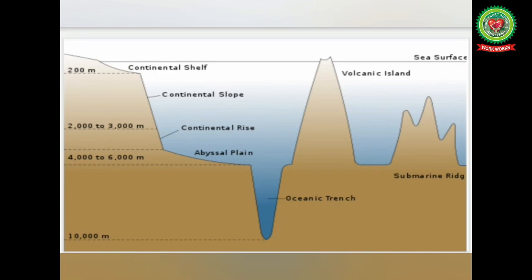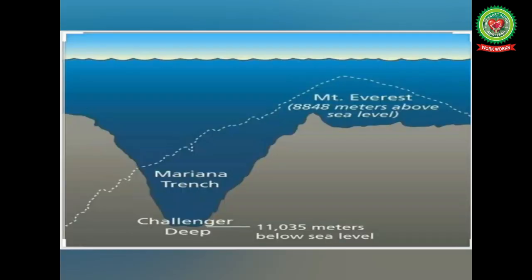The next feature is submarine trenches. A trench is a long, narrow, and steep-sided depression on the ocean floor. Trenches are the deepest part of the ocean bottom with their usual depth of about 5,500 meters. They have been formed due to down-faulting or down-folding of the earth's crust, making them tectonic in origin — formed due to volcanic or earthquake activity. They are most common in the Pacific Ocean. The deepest trench in the world is the Mariana Trench in the Pacific Ocean.